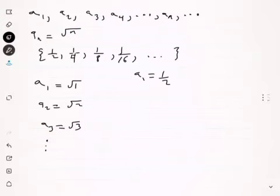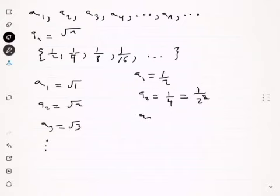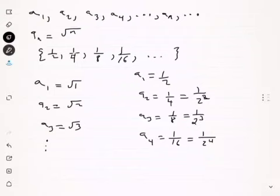Looking at the first term, A of 1 is 1/2. A of 2 is 1/4, which we rewrite as 1 over 2 to the second power. A of 3 is 1/8, that's 1 over 2 to the third power. A of 4 is 1/16, which is 1 over 2 to the fourth power. From here we can find that the nth term of the sequence is 1 over 2 to the n.